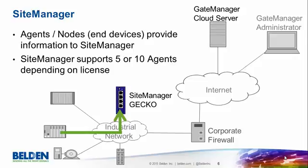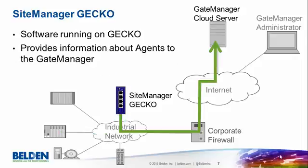The second component is known as the site manager. This is a device located on a remote site. The site manager's purpose is to collect information about the devices which are attached to the network. Typically, a license for a site manager will support either five or ten end devices. In the example on the screen, the site manager is actually running inside the Hirschmann Gecko, which is a five-port light managed switch. This product is typically used in small networks or by machine builders.